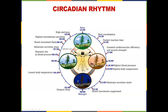At 12 noon, go eat some lunch. Your best coordination is around 2:30 — that's why after-school sports work really well then. Fastest reaction time is around 3:30. Your greatest cardiovascular efficiency and muscle strength is around 5 o'clock, so going to the gym at four or five in the afternoon is actually quite efficient from a cardiovascular and muscle standpoint.